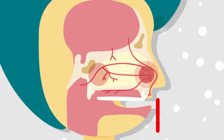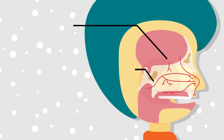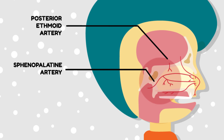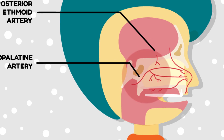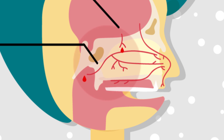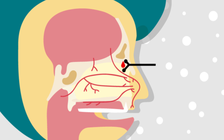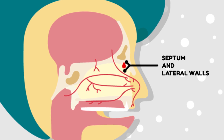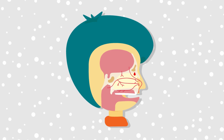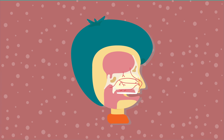The second site is the posterior part of the nasal cavity. When bleeding occurs from here, blood flows directly into the pharynx. The third site is diffuse bleeding, from the septum and lateral wall, which is often seen in general systemic disorders and blood dyscrasias.